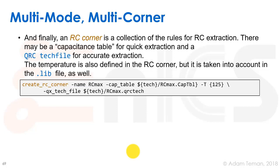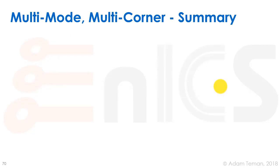The last part of our MMMC definition is the RC corner, which is a collection of rules needed for RC extraction. In Cadence tools we typically use a QRC tech file — a binary file telling the tool how to run extraction. There are different extraction scenarios such as maximum resistance or maximum capacitance. For instance, we create an RC corner called rc_max with the corresponding qrc_tech_file. We can also provide cap tables and a temperature for wire delay modeling, though cap tables are largely deprecated in recent technologies.